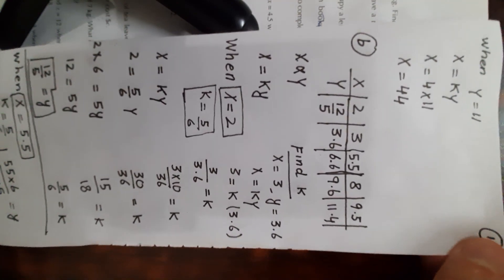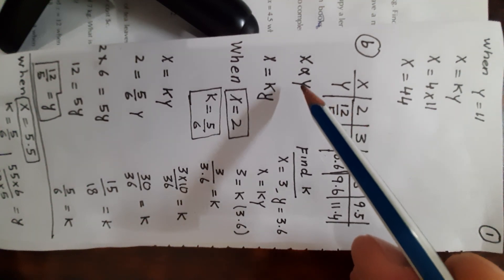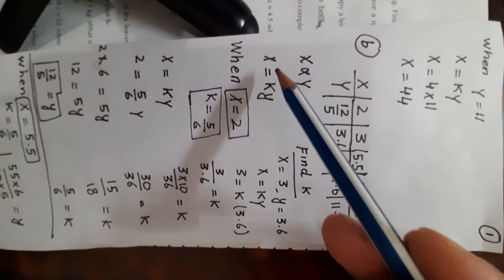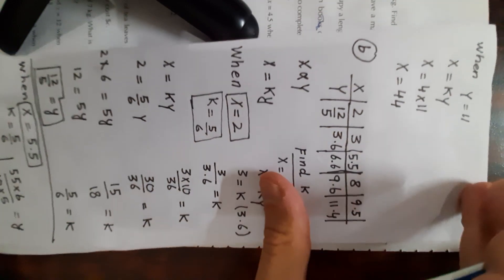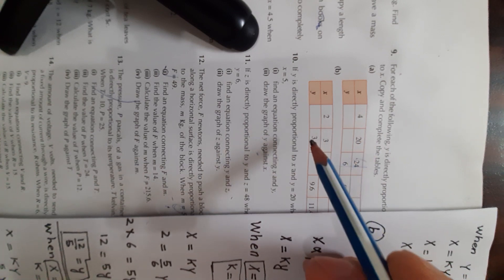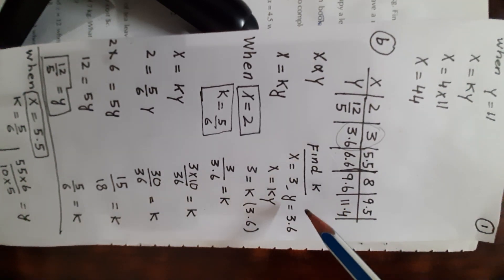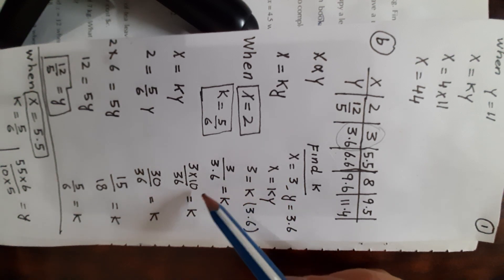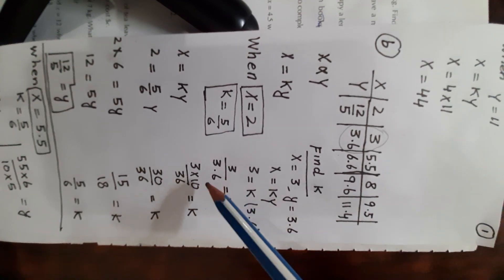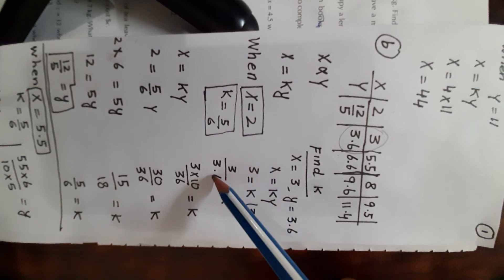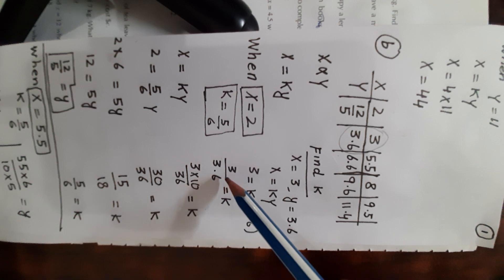Part b of question number 9 requires completing the missing values in the table again. The relationship is the same: x is directly proportional to y, so x equals ky. Look for values where both x and y are known: x is 3 and y is 3.6. Using these two values, find k: 3 divided by 3.6.